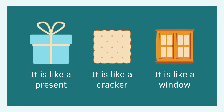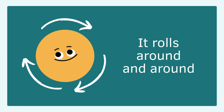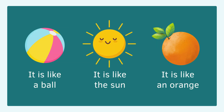This is the circle. It rolls around and around. The example of circle: ball, sun, and an orange.